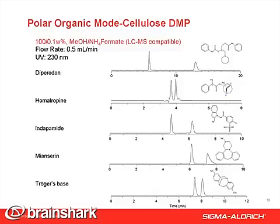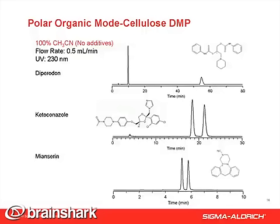Those separations seen on the previous slide can be successfully converted to LC-MS applications by using ammonium formate as an additive. As you can see, the separation is not compromised. This slide also shows three examples of good separation using 100% acetonitrile instead of methanol — and in that case, no additives are needed.